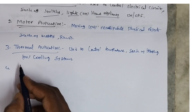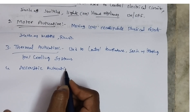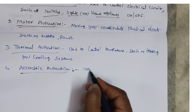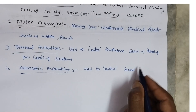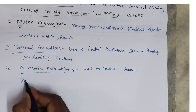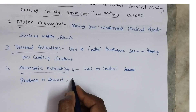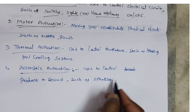The next type is acoustic actuation. Acoustic actuation is nothing but producing sound, such as through speakers. It is used to produce sound, for example using speakers. Now we will see some actuation technologies used in IoT.